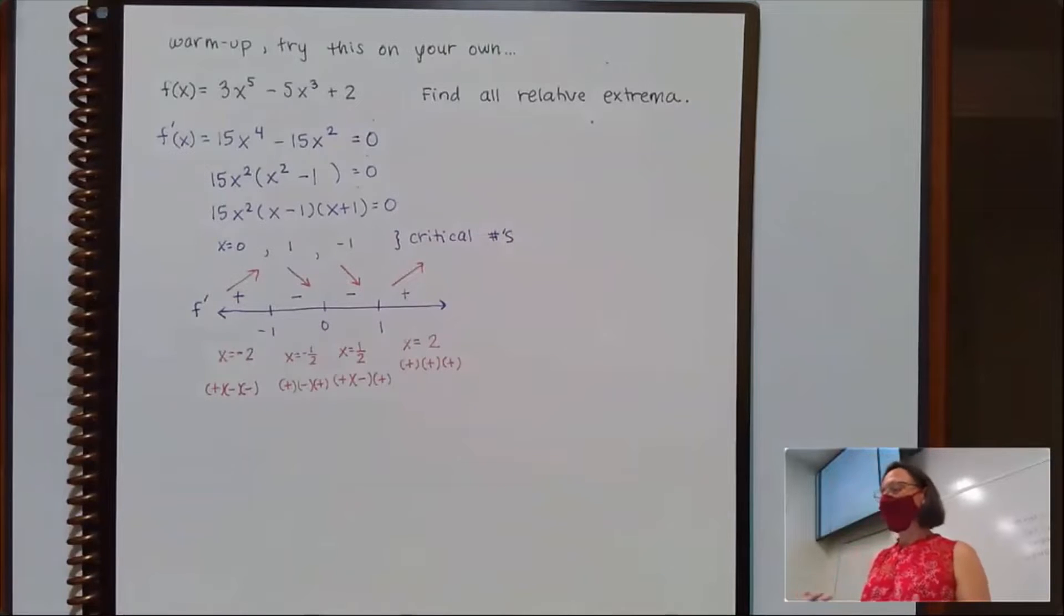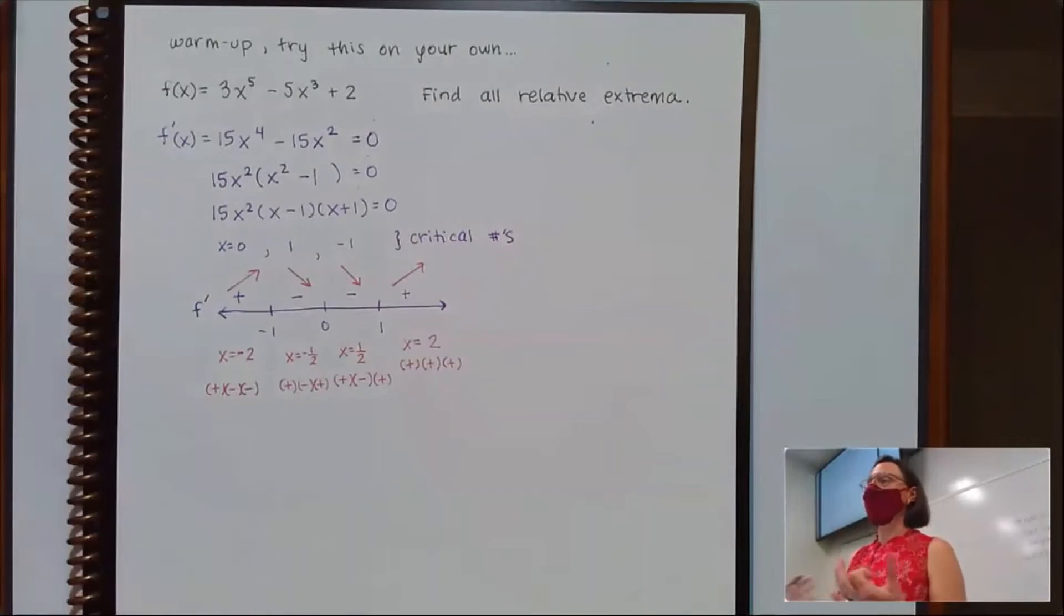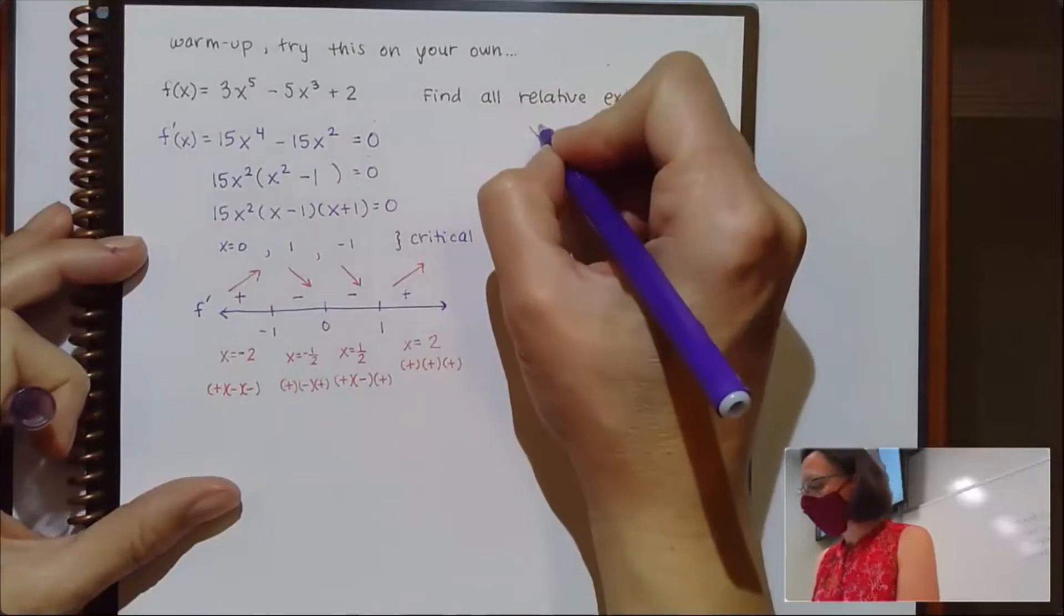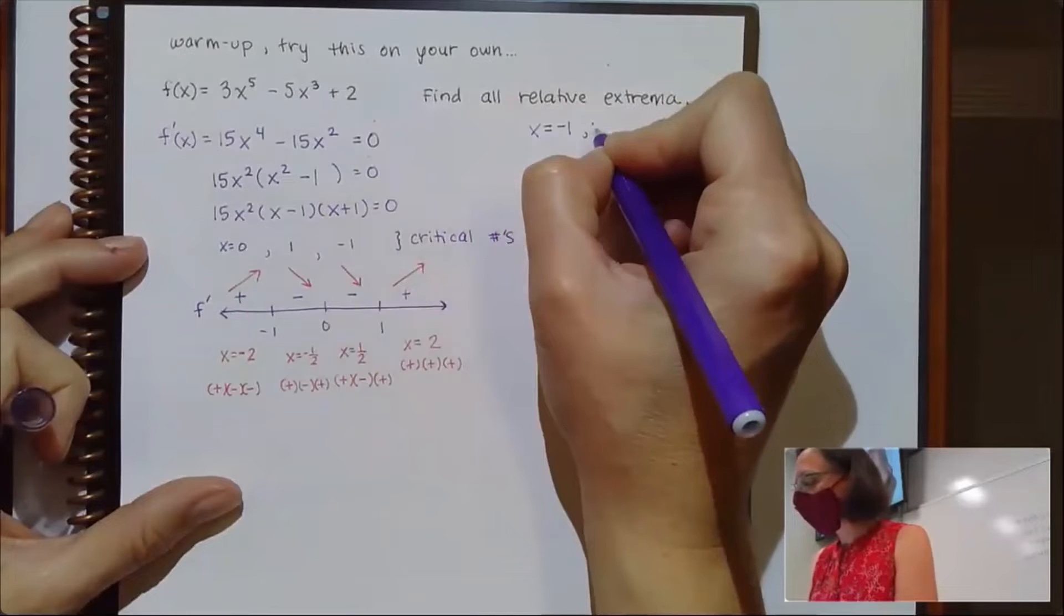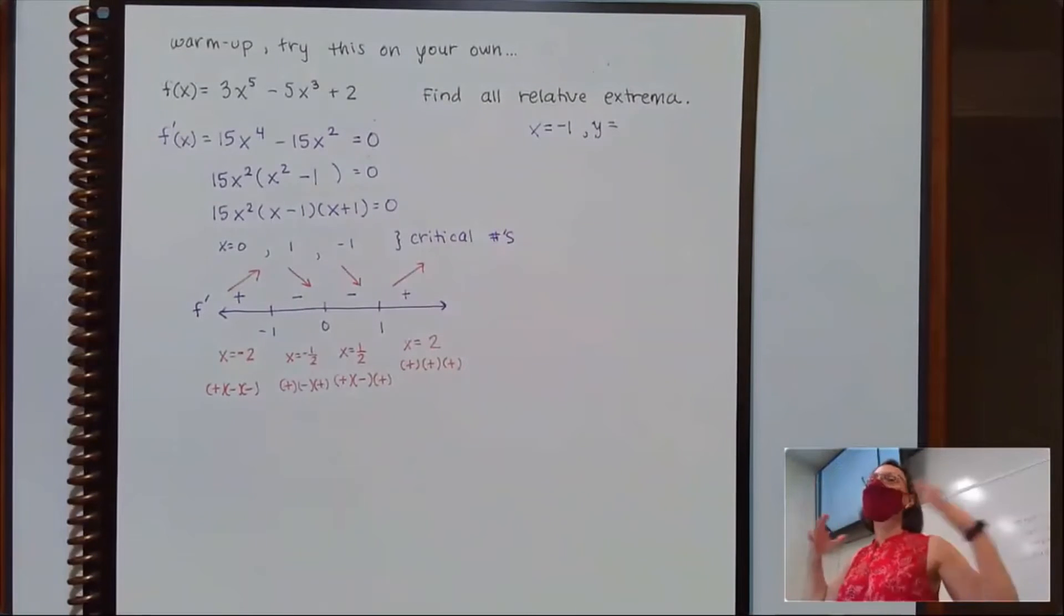So there's some subtlety to how questions get asked, and I've definitely been seeing this on WebWork. A lot of times when we ask for the relative extrema, we should just go ahead and give the x and y coordinates. And if you have any doubt on an exam situation, just go ahead and write out x equals negative 1, y equals, just give them both.